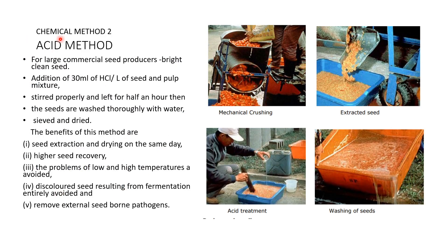The second chemical method is the acid method, which is the most common and recommended for large-scale commercial seed production because it gives bright and clean seeds. The process starts with mechanical or manual crushing, followed by addition of 30 ml of HCl per liter of seed and pulp mixture. The mixture is stirred continuously for one hour, then seeds are washed thoroughly with water, sieved, and dried — producing the same separation seen after 48 hours of fermentation.